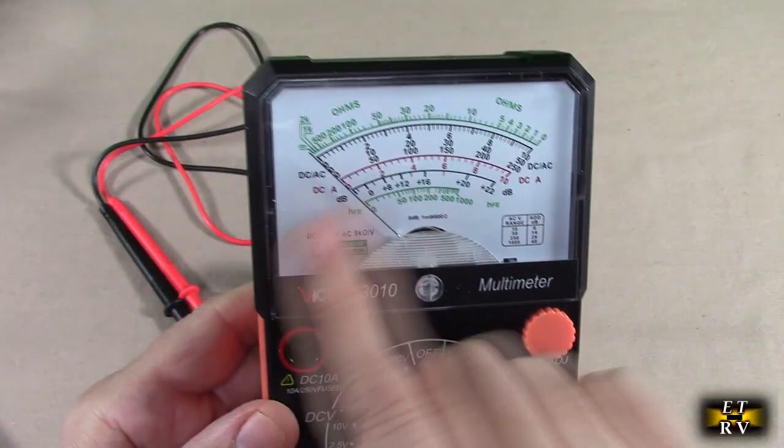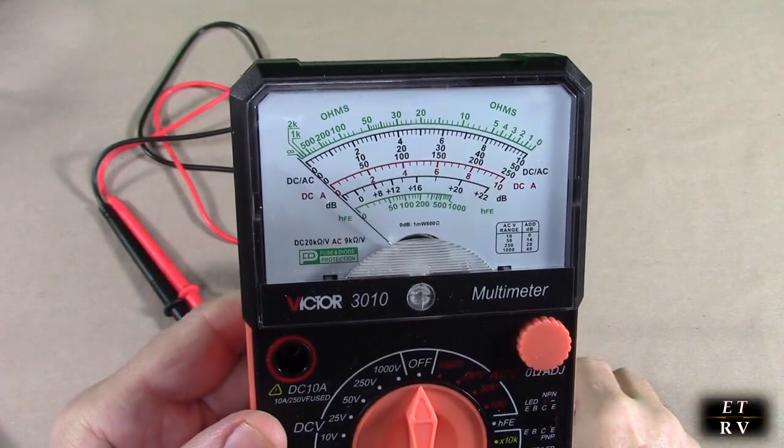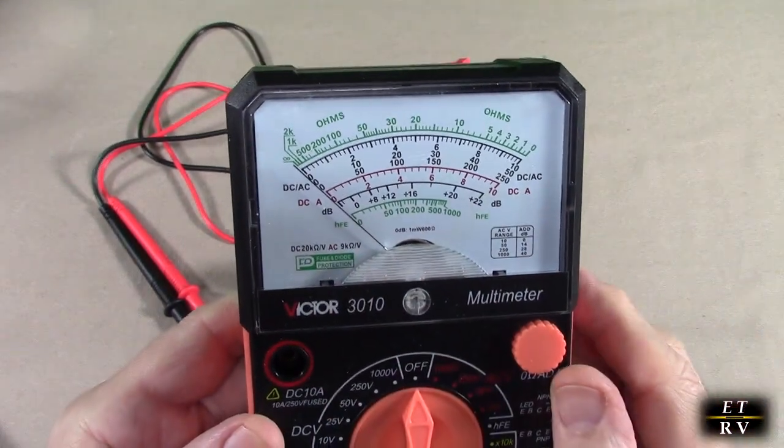There you can see the brand right there Victor 3010 and look at the scale right here. Let's do a close-up so you can see that it has the green, the black, the red.